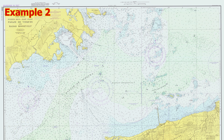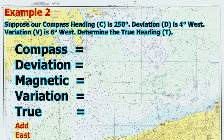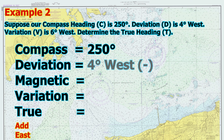Example 2. Suppose our compass heading is 250 degrees. The deviation is 4 degrees west. The variation is 6 degrees west. We need to determine the true heading. Step 1, apply deviation: compass 250 minus 4 west equals magnetic 246.